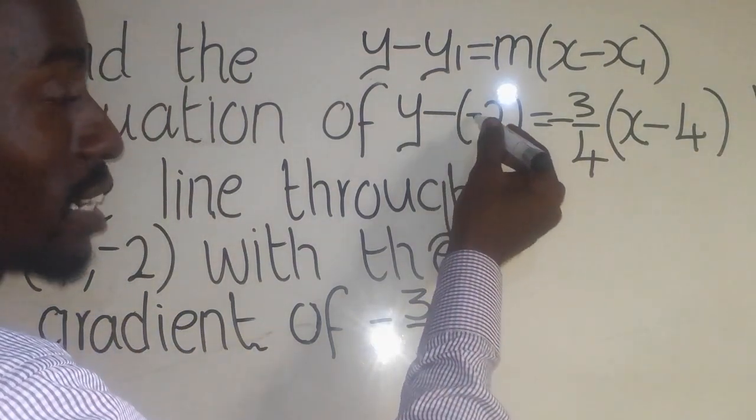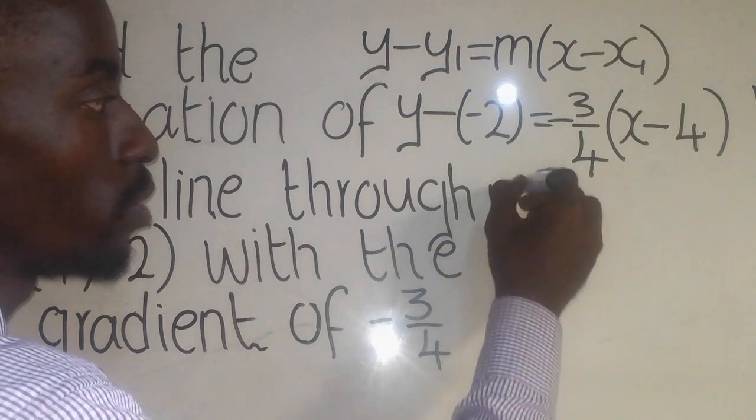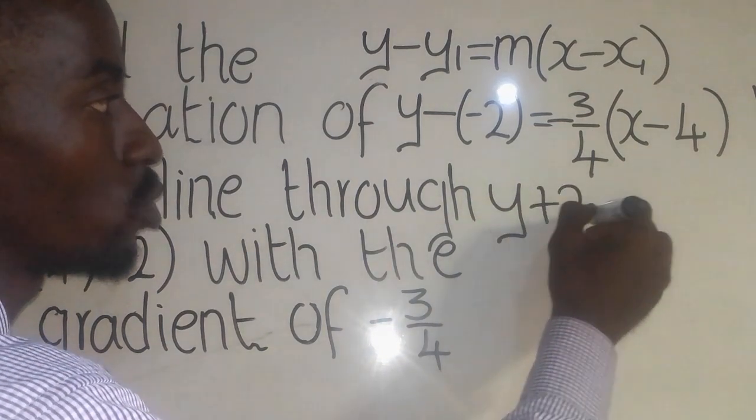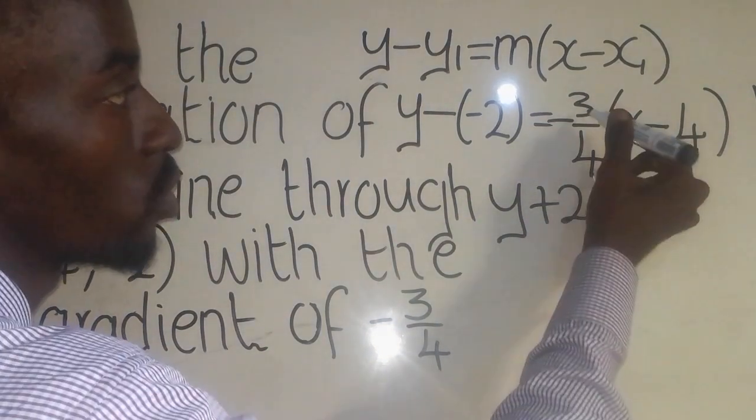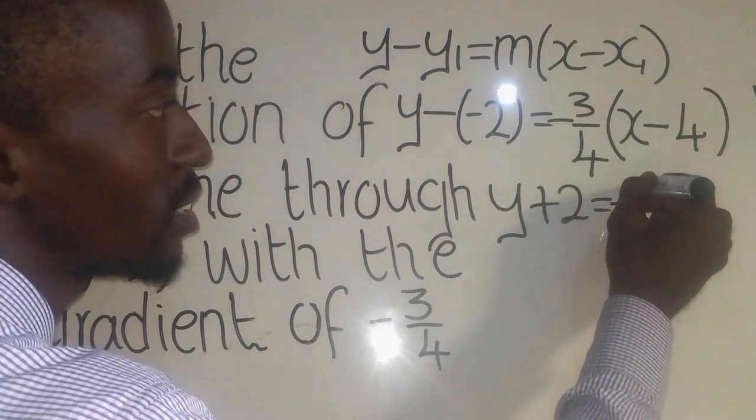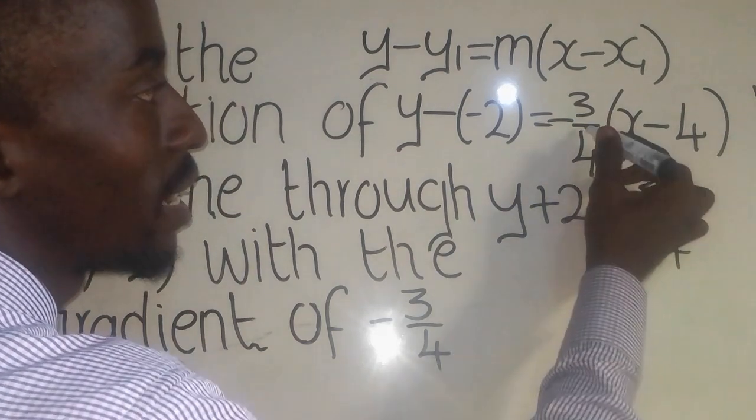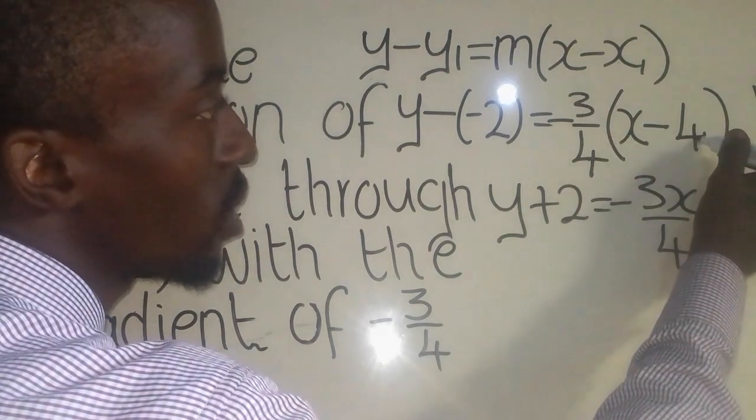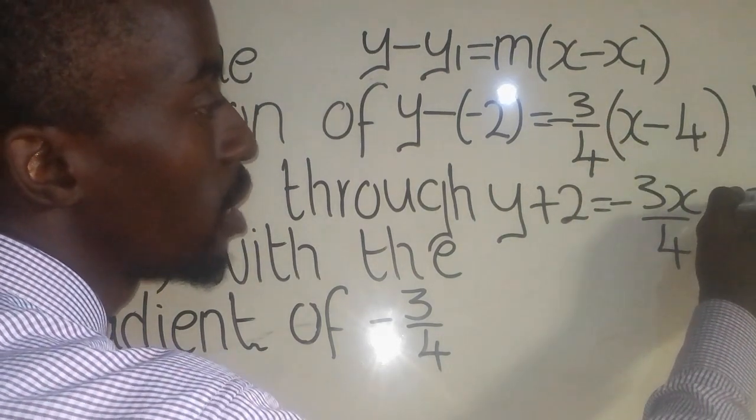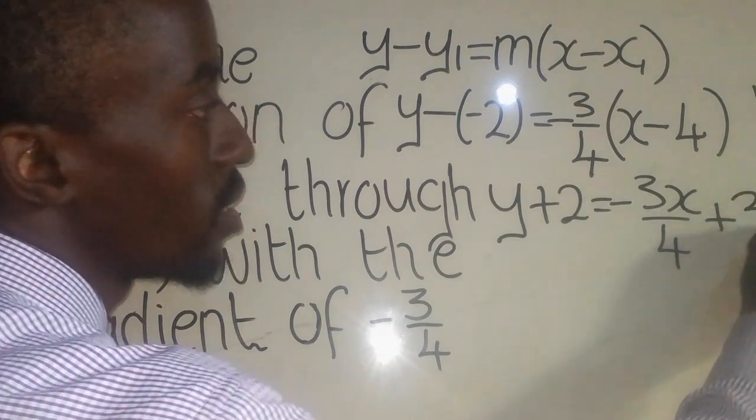So here, it will be negative times negative, it will be positive. So it will be y plus 2 equal to. So this one times this one will give me negative 3x over 4. Again, this one times this one here, it's going to give me positive 3 there.